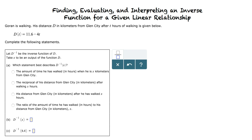Goran is walking. His distance d in kilometers from Glen City after t hours of walking is given below. d of t equals 11.6 minus 4t. Complete the following statements.